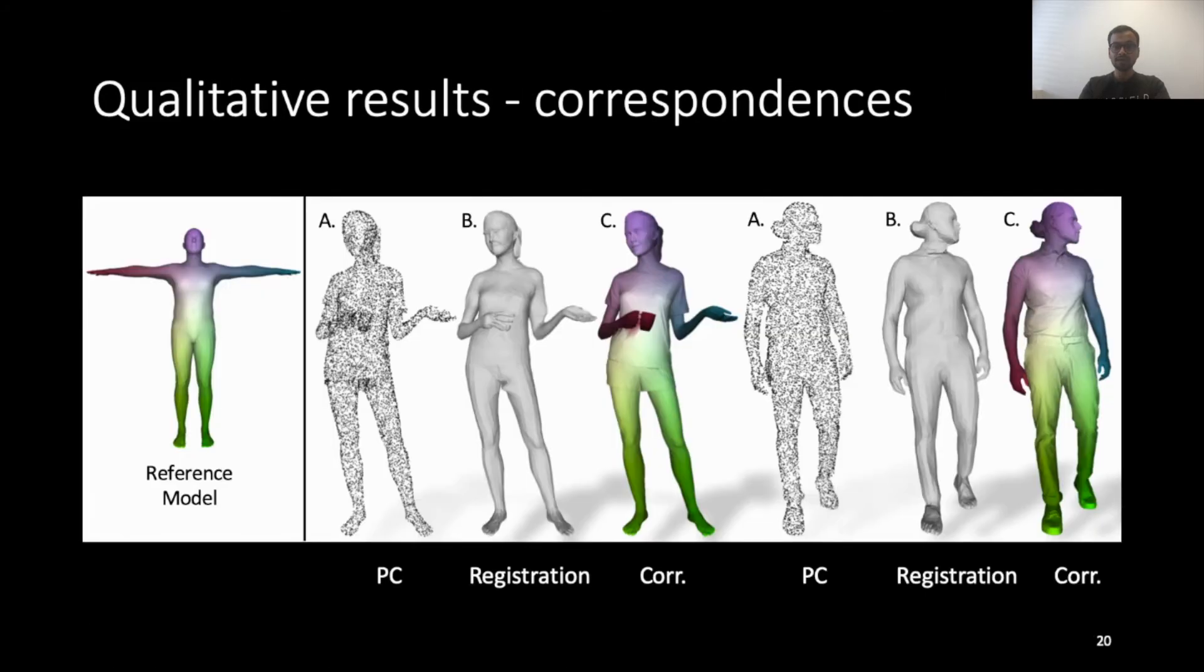We show some qualitative examples of correspondence prediction with our method. On the left, we see the color-coded reference model and we show in each set the input point cloud, registration and correspondences using LoopReg.